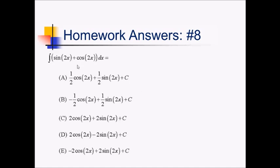For this problem, we want the antiderivative of sine of 2x plus cosine of 2x. We're going to go term by term and take antiderivatives as we go. For this first one, the antiderivative of sine in general is negative cosine, but we have a linear function of 2x, so we're going to have to divide by the derivative of that. That'll be negative one-half cosine of 2x. Next, the antiderivative of cosine of 2x — normally that's sine of 2x — but again, we have an inner function of 2x, a linear function with a slope that's not 1, so we have to divide by that linear slope of 2. That'll be one-half sine of 2x, and all of that plus c. That's going to give us answer choice B.